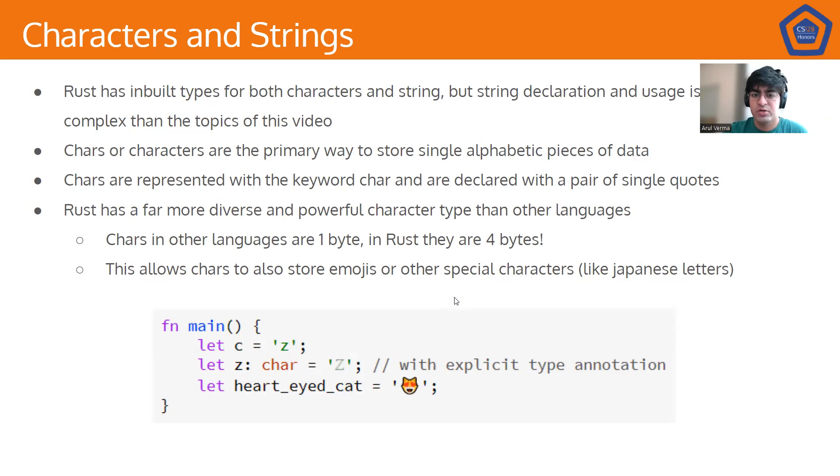So, Rust has inbuilt types for both characters and strings, but string declaration and usage is significantly more complex than what we cover in this video. Characters are what we use to primarily store single alphabetical pieces of data. They're represented with the keyword char, and are declared with a pair of single quotes. And Rust has a far more diverse and powerful character language type than other languages. And this is because of how sizes of data types work.